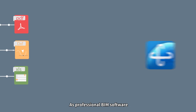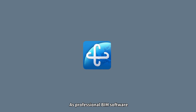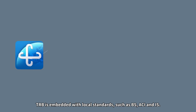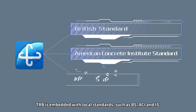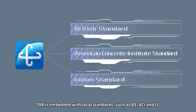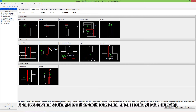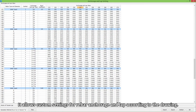As professional beam software, TRB is embedded with local standards such as BS, ACI, and IS. It allows custom settings for rebar, anchorage, and lap according to the drawing.